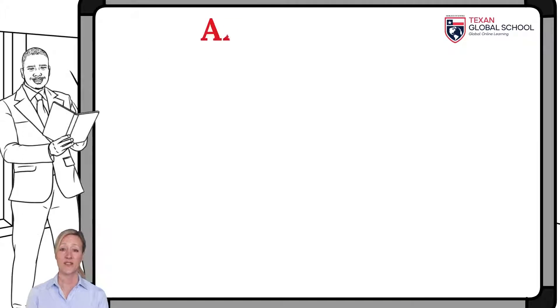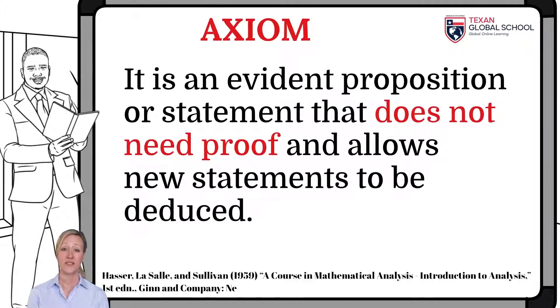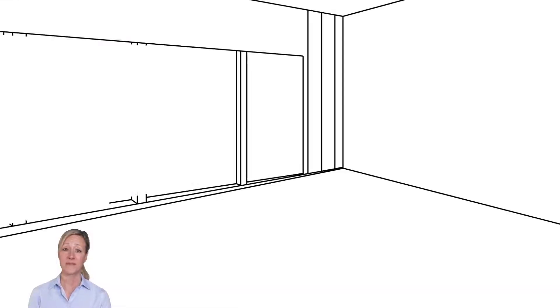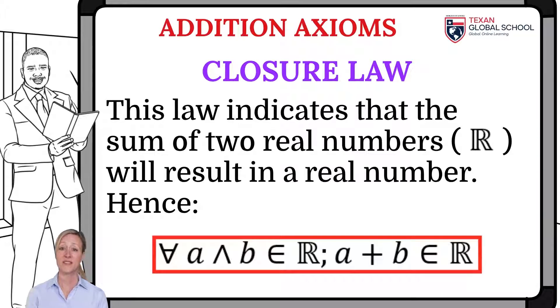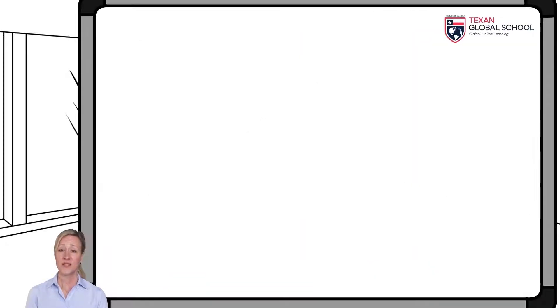An axiom is an evident proposition or statement that does not need proof and allows new statements to be deduced. In the addition of real numbers, the first axiom that we will analyze is the so-called closure law. This law indicates that the sum of two real numbers will result in a real number. Let's look at an example.